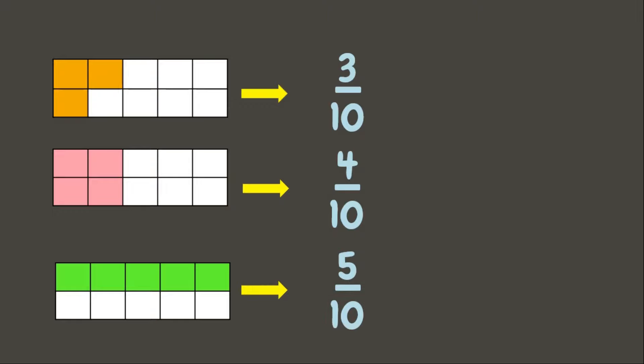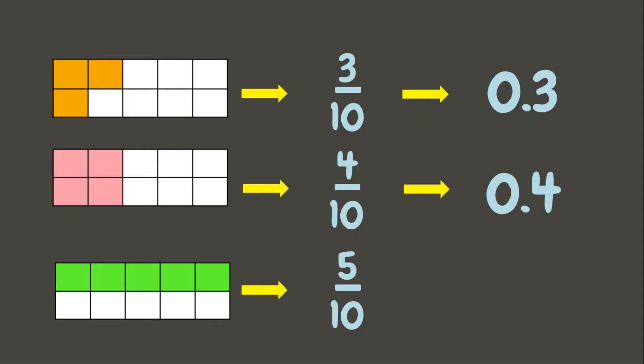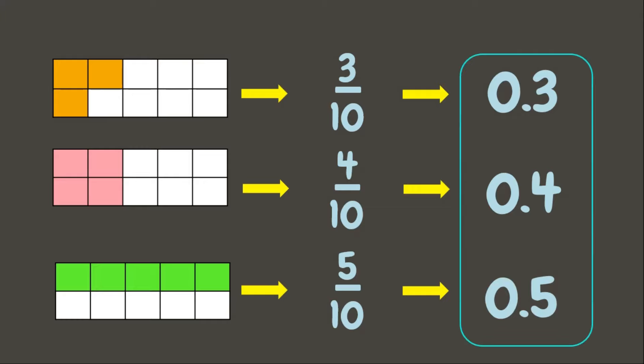And finally, we have five colored parts out of ten equal parts, and that is five tenths. Great job! But did you know that fractions can be written in another form? Yes! Three tenths can be written as 0.3, four tenths can be written as 0.4, while five tenths can be written as 0.5. These numbers are what we call decimals.